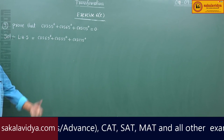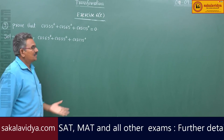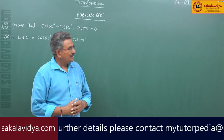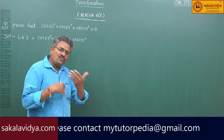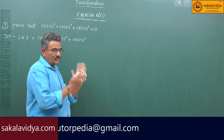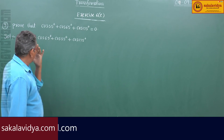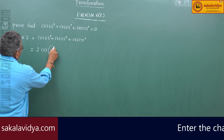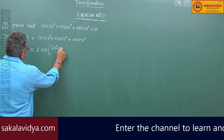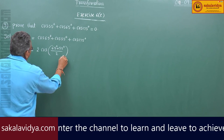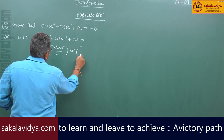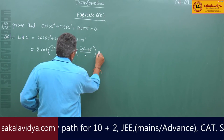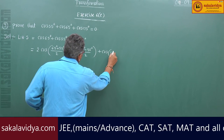Here 175° is a large value and can be written as 180° minus 5°. For the first two terms, we apply the cos C plus cos D formula: 2 cos((65°+55°)/2) cos((65°-55°)/2) plus cos(180° - 5°).